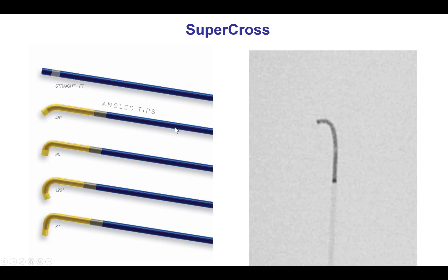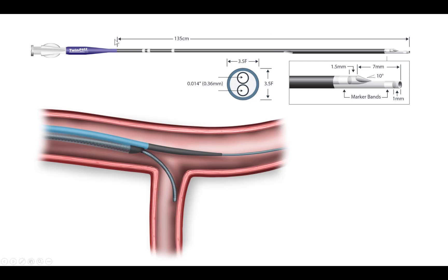The Venture catheter is currently on recall, so it is not clinically available. An alternative is the Supercross microcatheter — pre-shaped microcatheters available with bends from 45 up to 120 degrees. These are very similar to the Venture; they are advanced close to the area of tortuosity and help the wire negotiate tough bends. Another option is the dual-lumen microcatheter, such as the Twin Pass Torque, which allows wiring of side branches and can be used in various types of tortuosity.